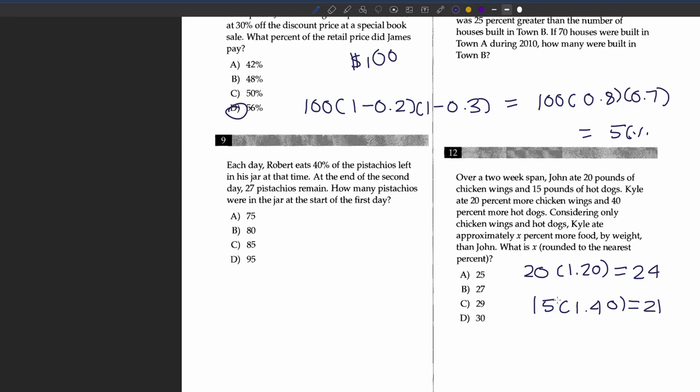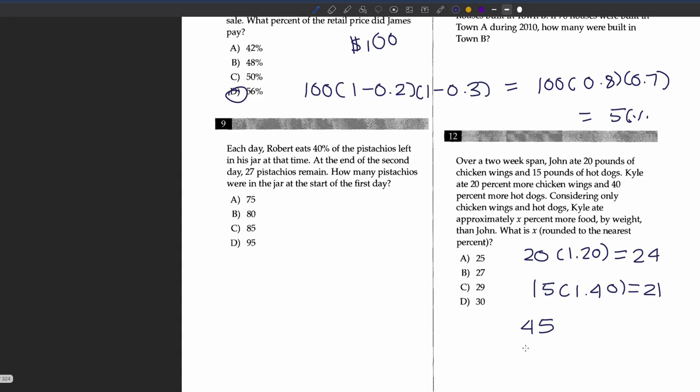We add these together to get 45 pounds for Kyle. Using the percentage error formula, we subtract the old value of 35 (from 20 pounds of chicken wings and 15 pounds of hot dogs) from 45, divide by 35, which equals 0.29. Multiply by 100 to get 29 percent.